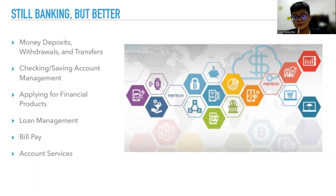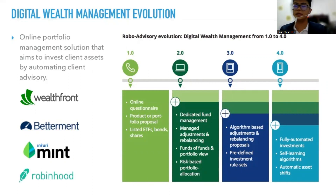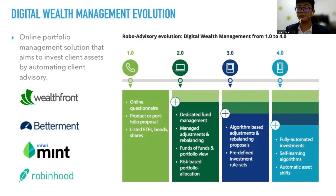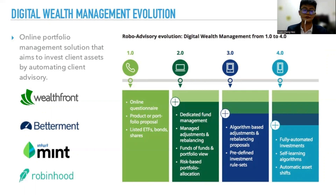So we still need banking, but Fintech makes it better — saving time, fast, saving your money. And for digital wealth management evolution, the best thing is that, you know, human beings have emotions. They are affected by surrounding environments or maybe other people. If they're angry, they may give wrong direction or wrong advice. But Fintech checks your online portfolio management and gives you a management solution, aiming to give the client access by automating the client's devices.